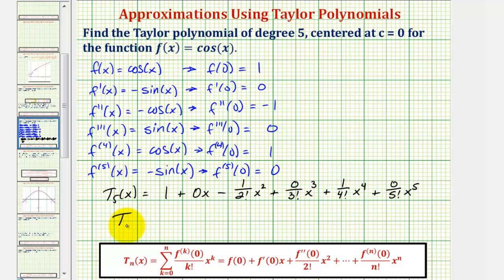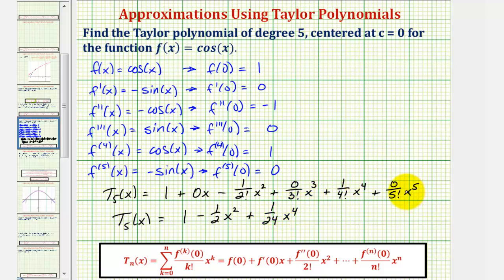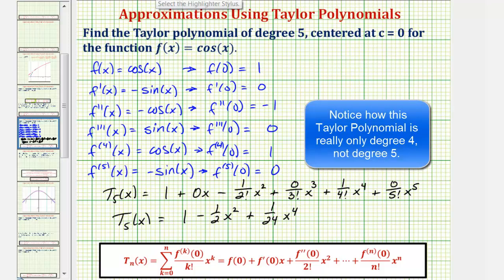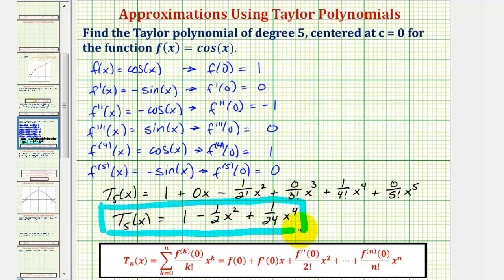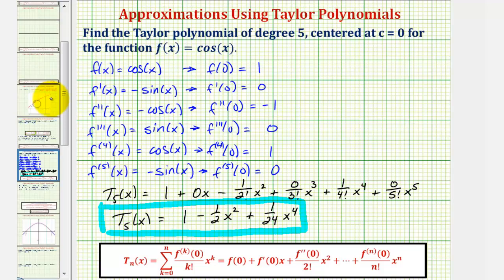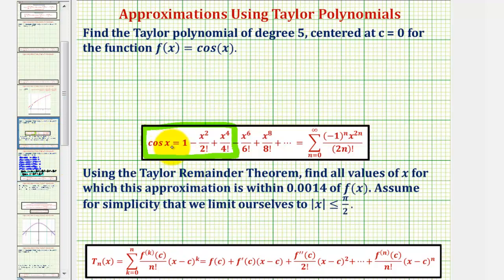Now let's simplify. T of x equals one, minus one half x squared — since the zero terms drop out — plus one over 24 x to the fourth, and the last term is also zero. So this is our Maclaurin polynomial, or Taylor polynomial centered at zero. Going back to the first slide, notice how the terms we found are the same first three terms of the power series for cosine x centered at zero.